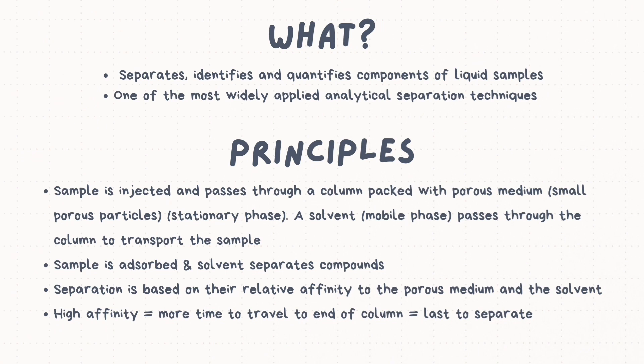As for the principles of HPLC and how it works: first, the sample is injected into the HPLC equipment and passed through a column packed with porous medium consisting of small porous particles — this is the stationary phase. A solvent, considered the mobile phase, passes through the column to transport the sample. The sample is absorbed on the stationary phase and the solvent separates the compounds one by one, based on each compound's relative affinity to the porous medium and the solvent.